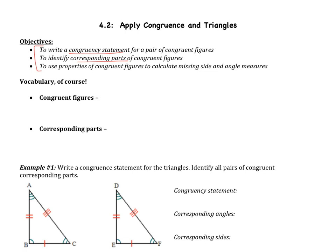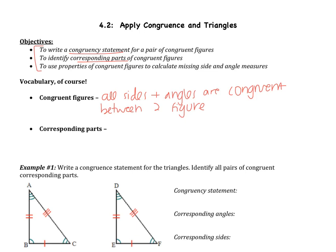You've learned congruent before. Congruent means an equal measure — if angles are congruent, they have the same measure; if segments are congruent, they have the same length. For figures to be congruent, all sides and angles must be congruent between the two figures. Those congruent sides or angles of two congruent figures are called the corresponding parts.